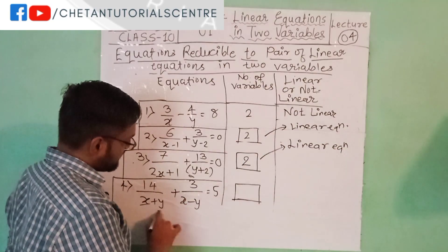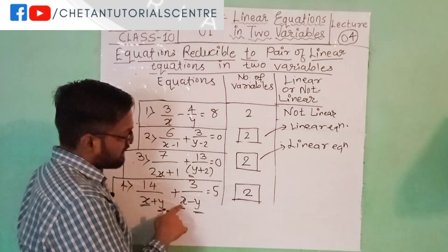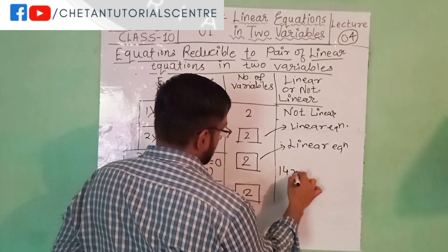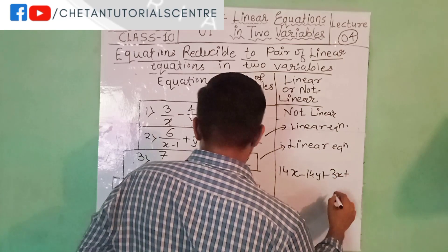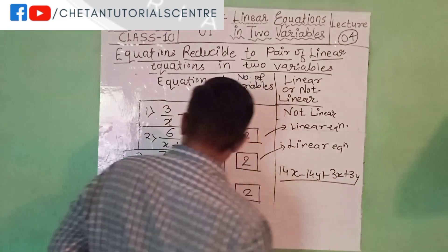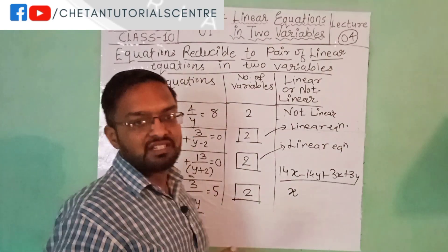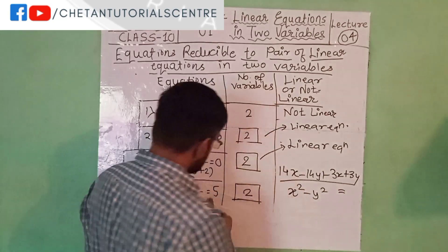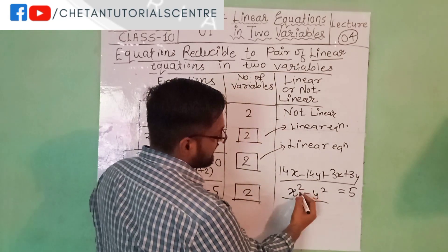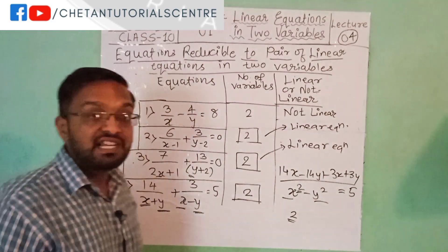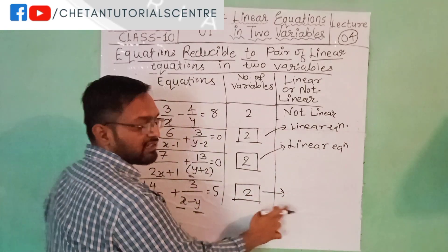Here there are 2 variables: x and y. Doing the multiplication, we get 14x minus 14y plus 3x plus 3y, and this gives x squared minus y squared because (x plus y)(x minus y) equals x squared minus y squared, which is equal to 5. If we solve this further, the degree will be 2. So this means this equation is a non-linear equation.